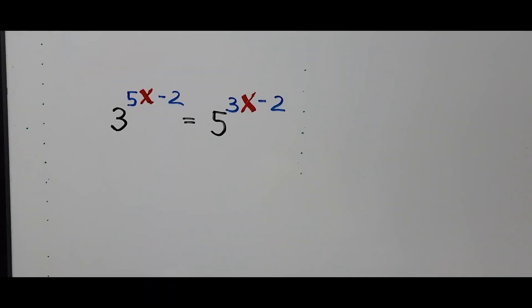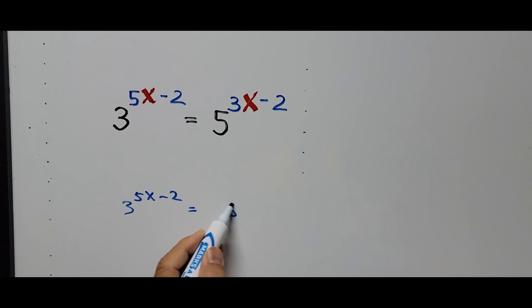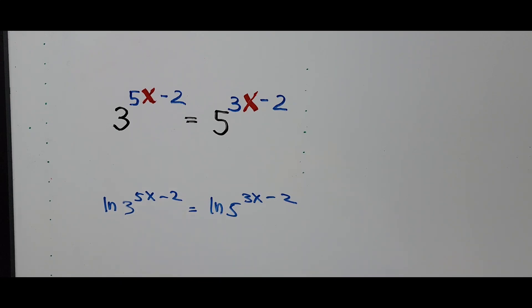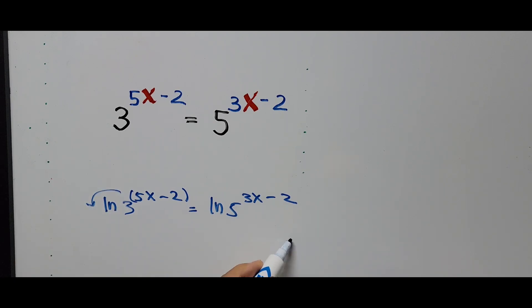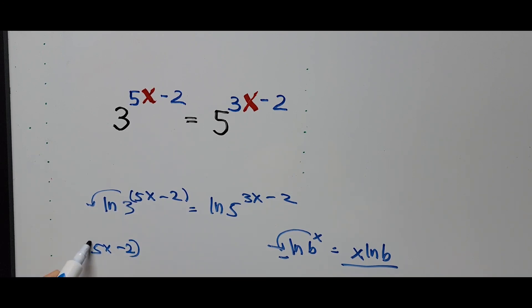We have 3 to the power 5x minus 2 equals 5 to the power of 3x minus 2. We apply the natural logarithm to both sides, giving us ln of 3 on the left and ln of 5 on the right. We bring the exponent to the front as a coefficient using the rule: ln of b raised to x equals x times ln of b.